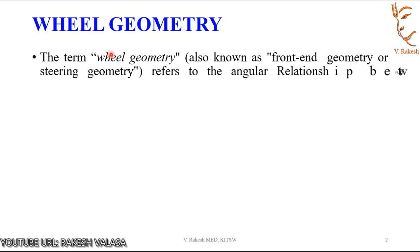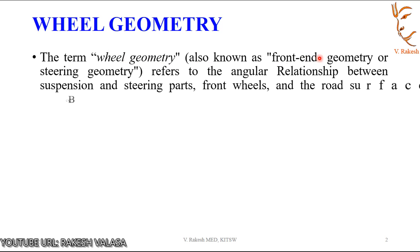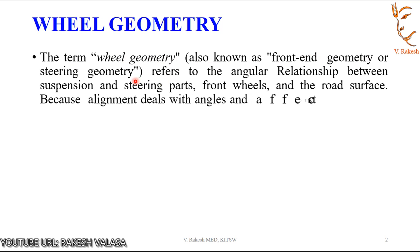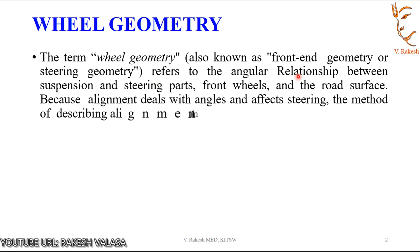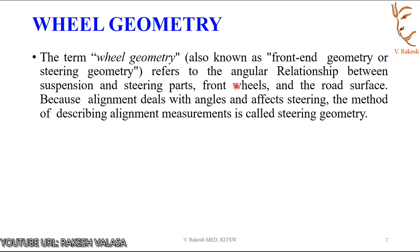The term Wheel Geometry, also known as Front End Geometry or Steering Geometry, refers to the angular relation between suspension and steering parts, front wheels and road surface. Because alignment deals with angles and affects steering, the method of describing alignment measurements is called Steering Geometry or Wheel Geometry. Wheel alignment refers to the relative positioning of the wheels for obtaining a true and free rolling movement.